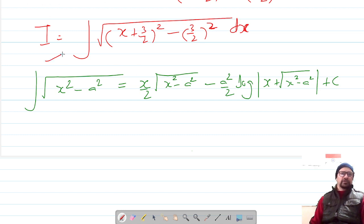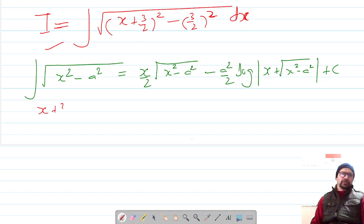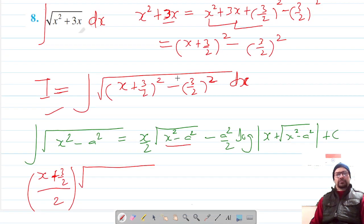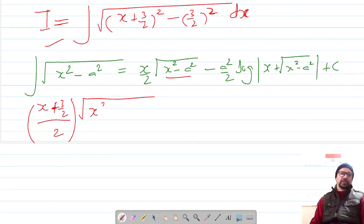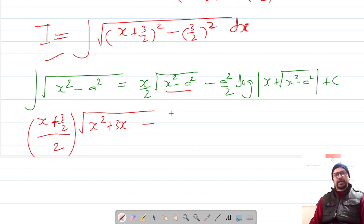When we apply this formula on this it gives us x by 2, that is x plus 3 by 2 upon 2, and this gives x square minus a square. It was actually x square plus 3x, so x square plus 3x minus a square is 3 by 2, it's a square which is 9 by 4.